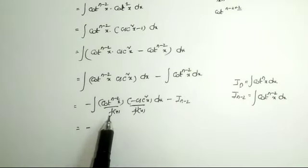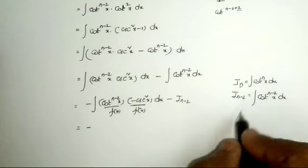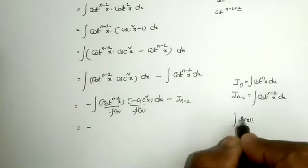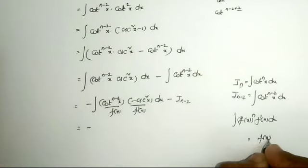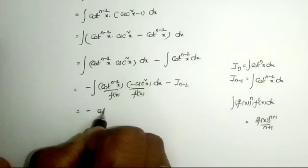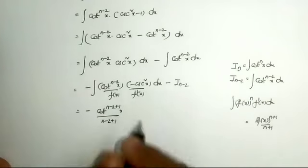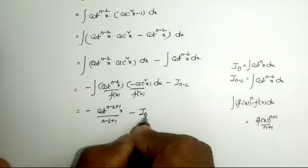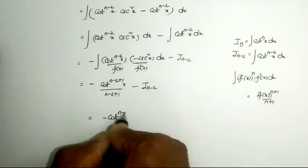Suppose we take f(x) equals cot x, then its derivative f'(x) equals minus cosec² x. So the first integral is clearly in the form of the integral of [f(x)]^n times f'(x) dx, and that integration equals f(x)^(n+1) divided by (n+1). Applying this formula, the result is minus cot^(n-2+1) x divided by (n-2+1).